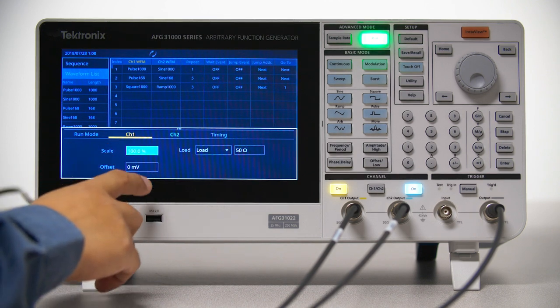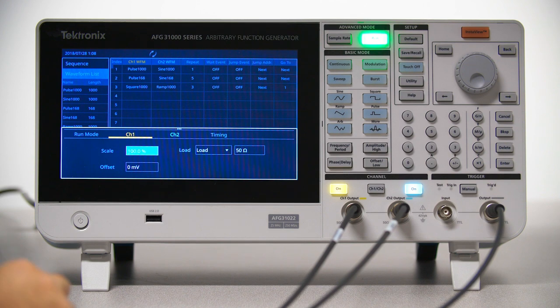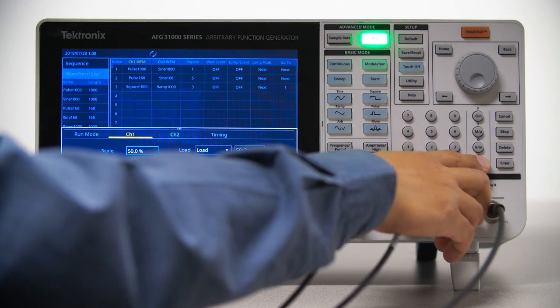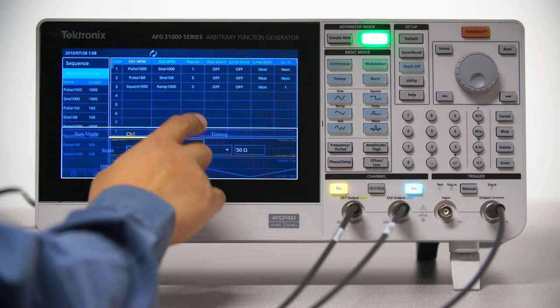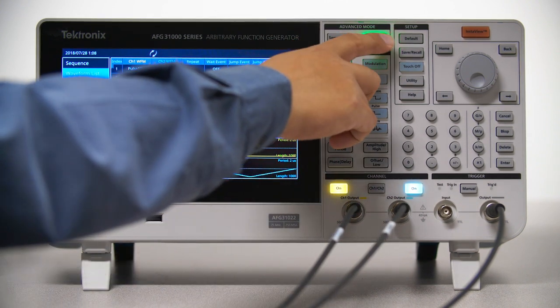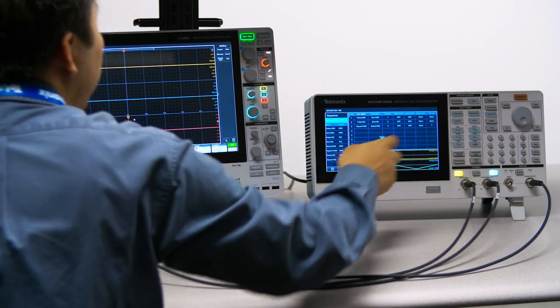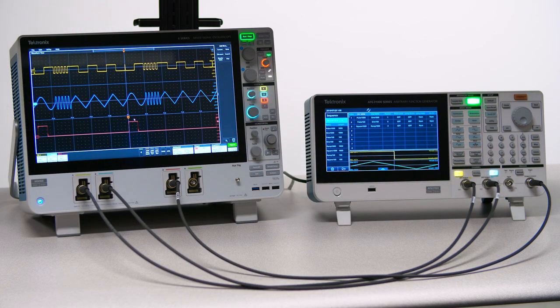And let's change the output amplitude of Channel 1 to 50% of the original setting in the waveform. I'll click the Run button twice on the front panel for the changes to take effect. You can see the change on the scope in terms of the frequency and amplitude of Channel 1 output.